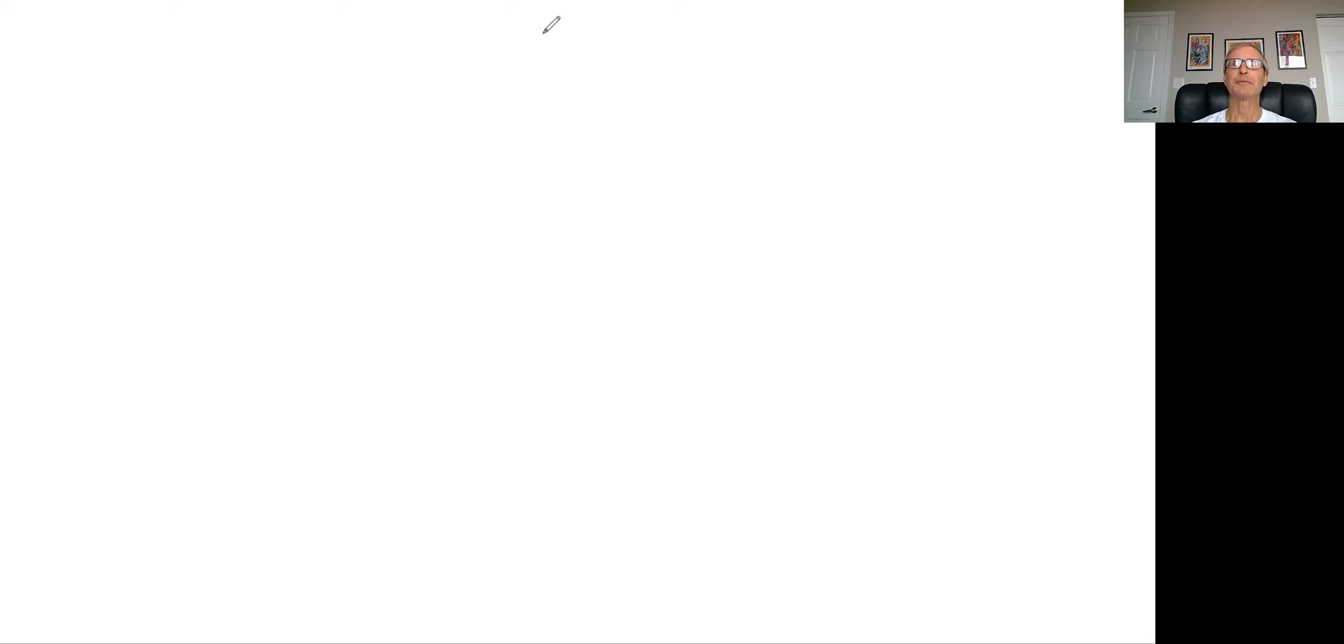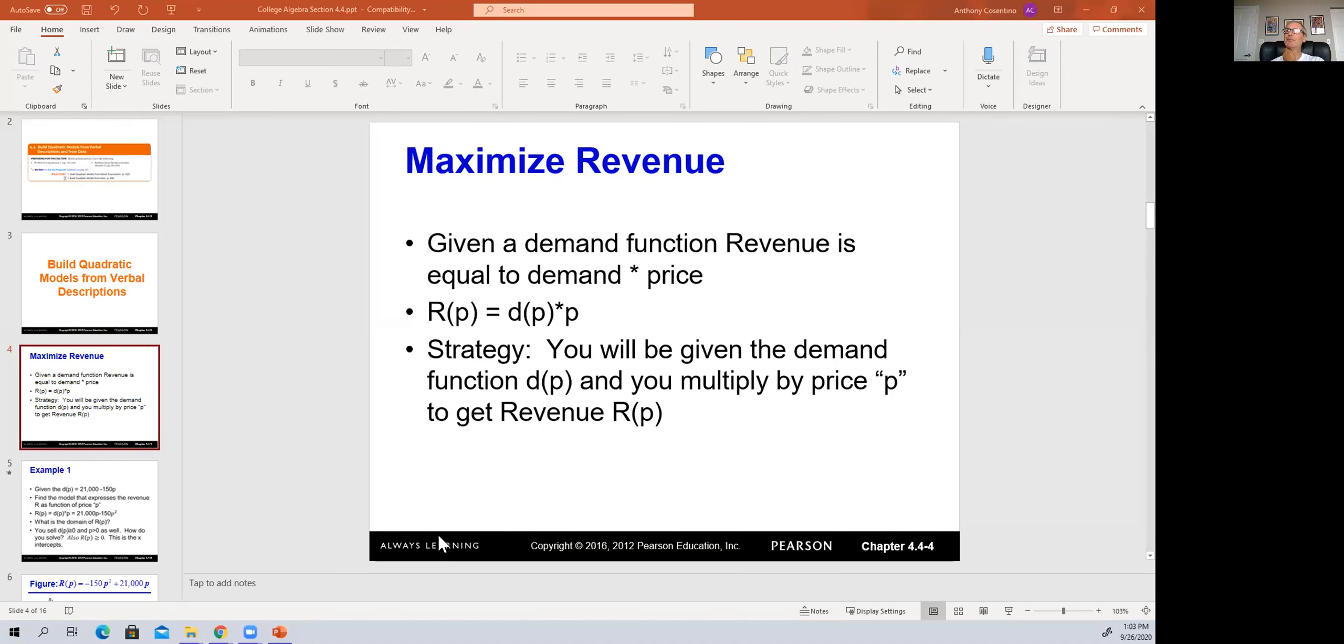And so the idea of a demand equation would be set up where the demand equation would be set up in such a way where you're going to be given a demand equation that some economists derive. And it'll be dependent on price. And then how do you find revenue?